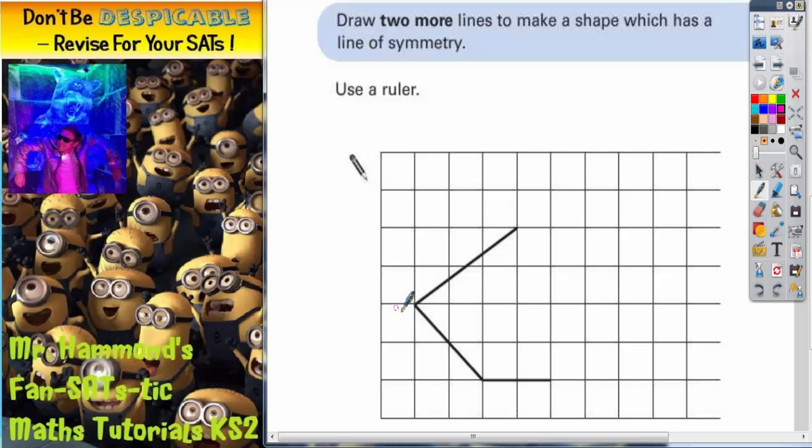So first thing to check for is the horizontal and vertical lines of symmetry. So if we draw in a horizontal line of symmetry, obviously anything you do draw in you would be using a ruler. If we actually draw that in, could we make this shape symmetrical?